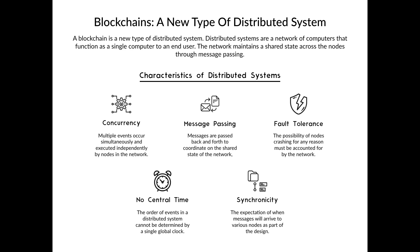Finally, there's synchronicity. This refers to the expectation of how messages are delivered. Generally, there are two ways to describe a distributed system: synchronous and asynchronous. In a synchronous system, you can assume that messages will be delivered within a fixed and known amount of time. Synchronous systems aren't very practical to design around because network behavior can often be unpredictable and unreliable. In an asynchronous system, it's assumed that a network might delay messages or deliver them out of order — in other words, there's no fixed upper bound on how long a message might take to be received.